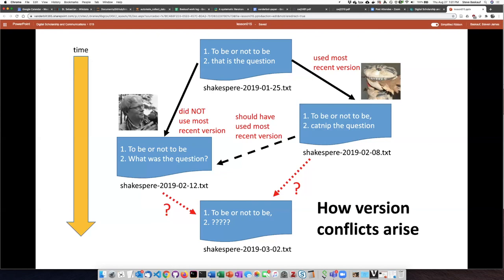This can happen even to a single person if you work on documents at home and also at work. So one of the things that version control and GitHub in particular is designed to eliminate are these sorts of version conflicts.